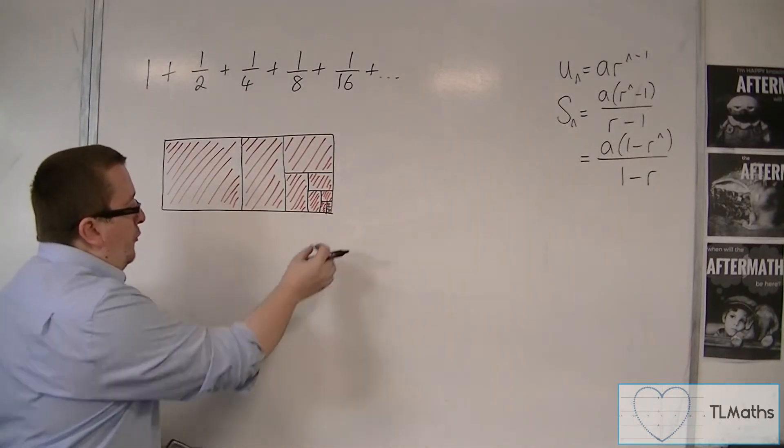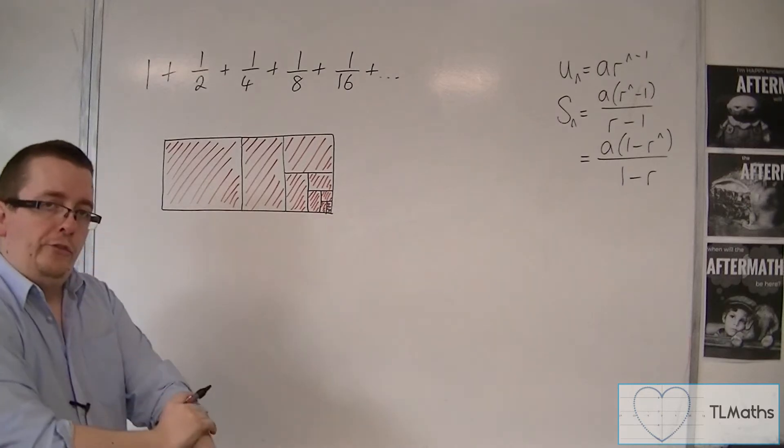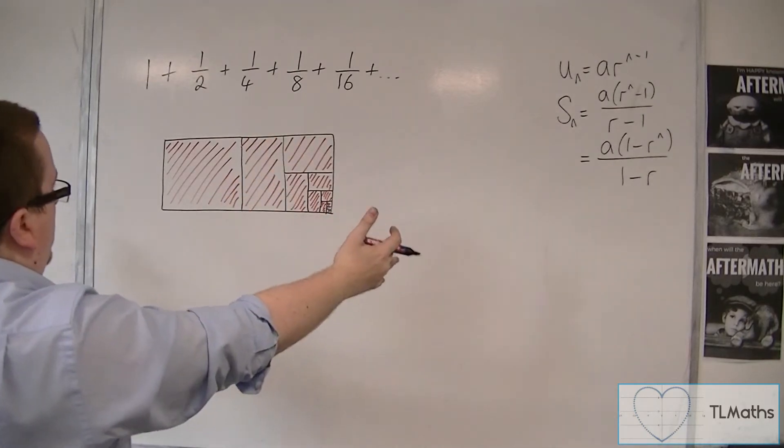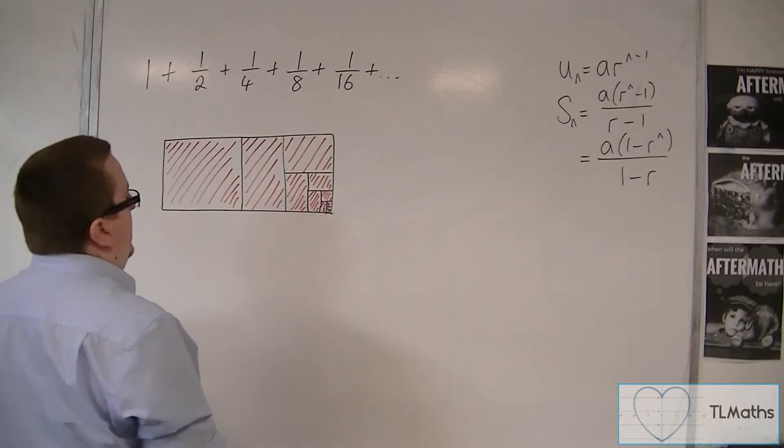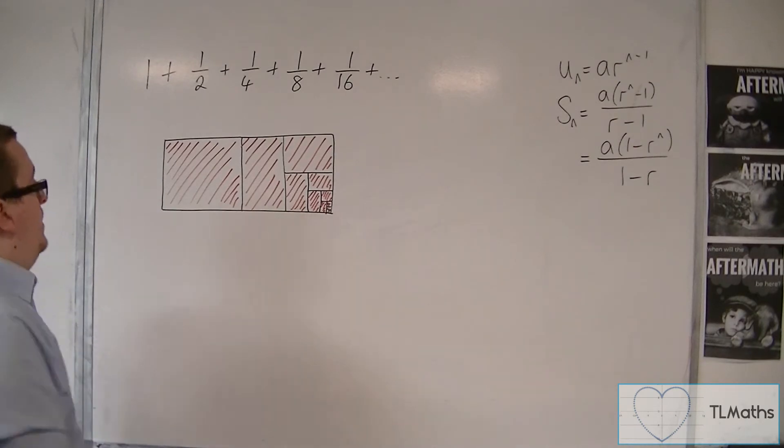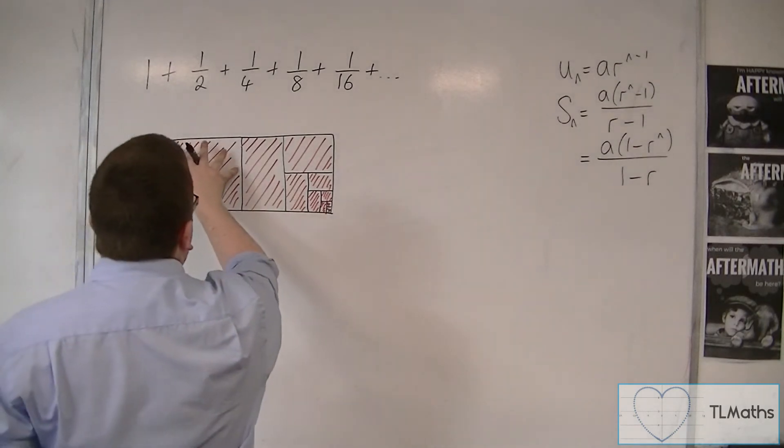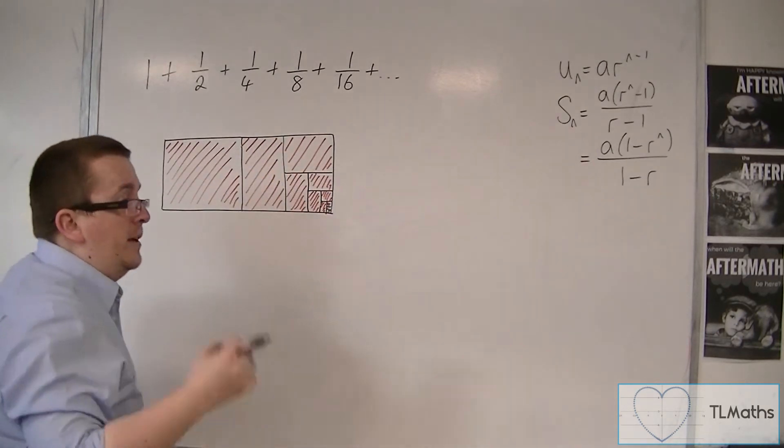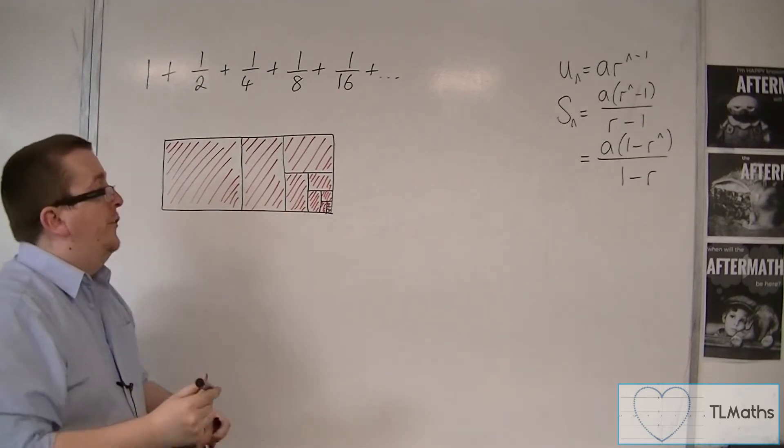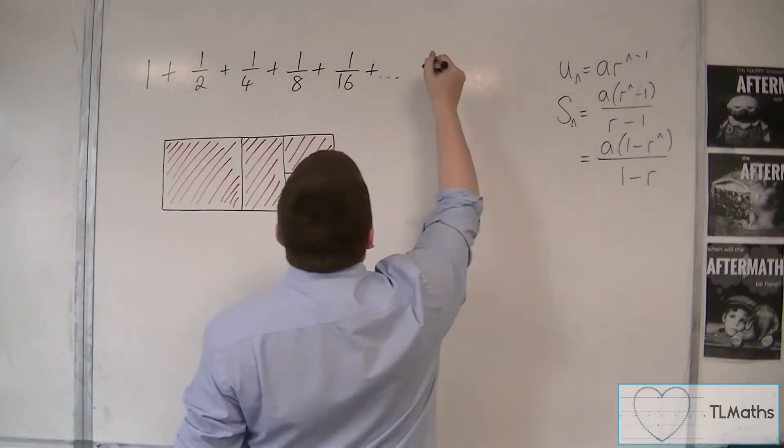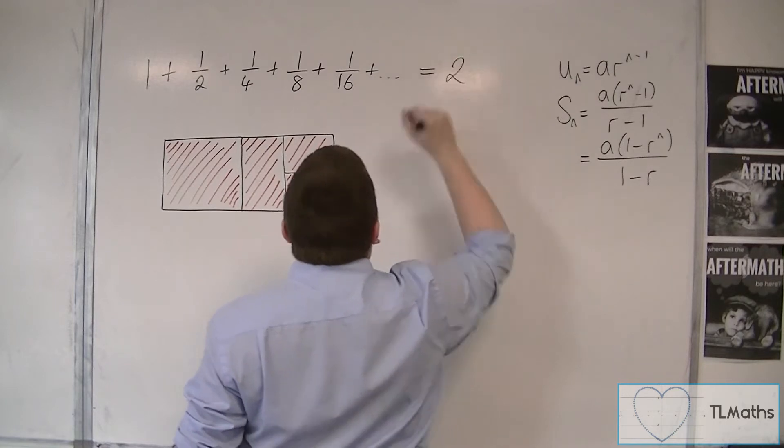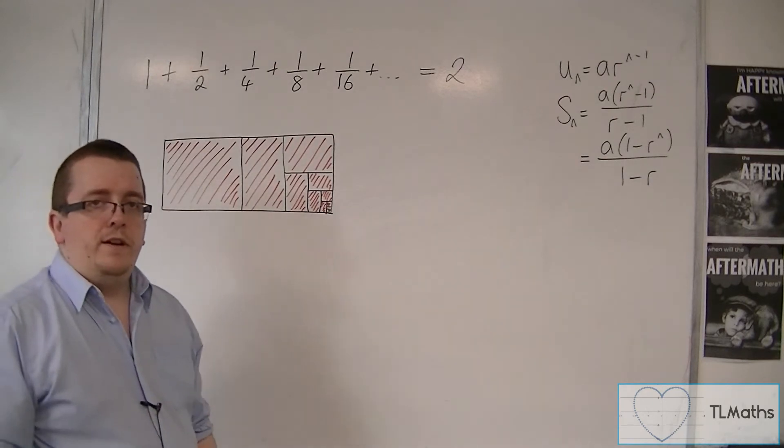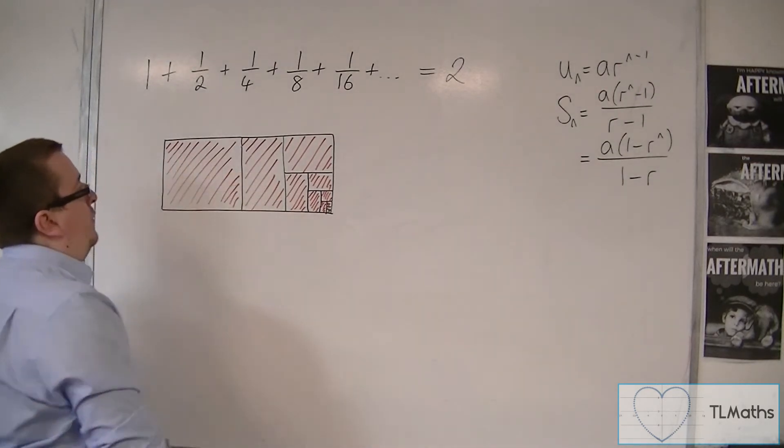And I keep on adding on smaller and smaller and smaller bits. Until what you can see in total is that all of these things must add up to 2. Because that is 1 square. That was 1 box. And that was the other box. And I'm getting closer and closer and closer to completely colouring in the second box. And so the infinite sum is equal to 2. So I can add up an infinite number of things and get a finite number, as we can see here.